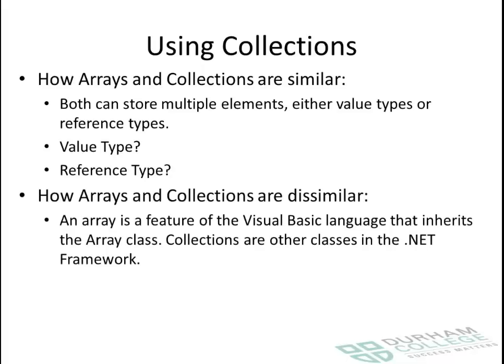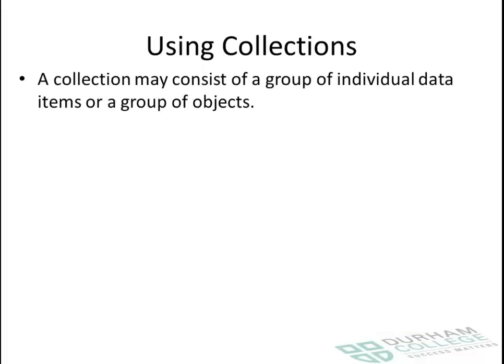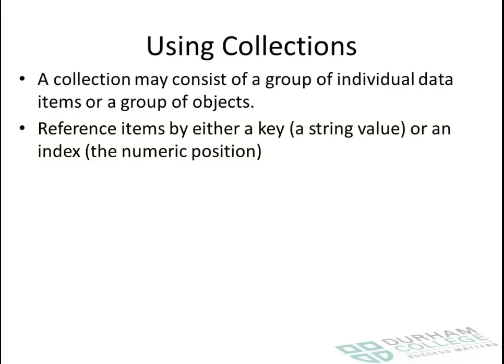They're different in that the main thing you'll see in terms of functionality is that arrays are fixed in size and collections are variable in size. So if you have a list where you're not sure how many elements are going to be in that list, collections are very useful for that. You can reference items by either a key, a string value, or an index.